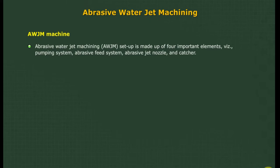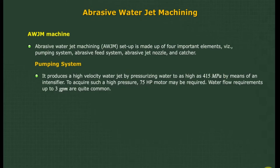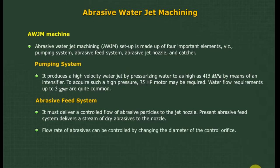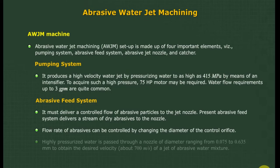The AWJM setup is made up of four important elements: pumping system, abrasive feed system, abrasive jet nozzle, and catcher. The pumping system produces a high-velocity water jet by pressurizing water to as high as 415 MPa by means of an intensifier; a 75 HP motor may be required, with water flow requirements up to 3 gallons per minute. The abrasive feed system must deliver a controlled flow of abrasive particles to the jet nozzle; flow rate of abrasives can be controlled by changing the diameter of the control orifice.